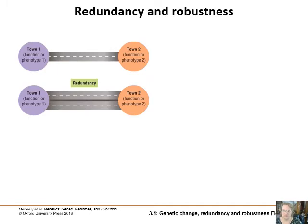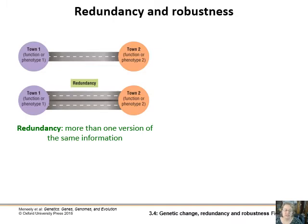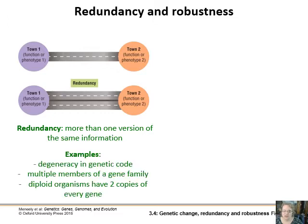Redundancy and robustness are two key terms. Redundancy means having more than one version of the same information — instead of just one road between two towns, you have two redundant roads. If something happens, you've got somewhere else to go. Examples in biology include degeneracy in the genetic code, where multiple codons code for the same amino acid, so a minor DNA change may still produce the same amino acid. There are also multiple members of gene families — duplicated genes doing similar functions — and simply being diploid means you have two copies of every gene thanks to having two chromosomes.